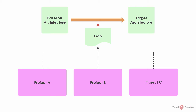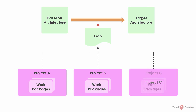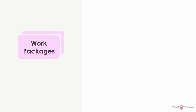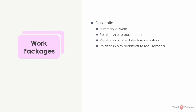But projects can be very big. What you have to do is decompose work into smaller, more manageable components until satisfied that the work is defined at a sufficient level of detail to estimate time, cost, and resource. The components decomposed are known as work packages. For each work package, the following has to be specified. Description: describe what will be performed under this work package and the expected outcome. You may also explain the reason for initiating the work package, the prerequisites, and its relationship to opportunity, architecture definitions, and architecture requirements.